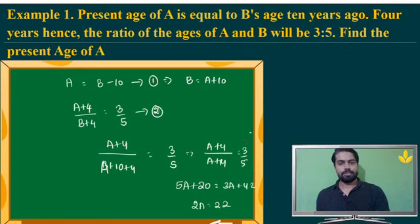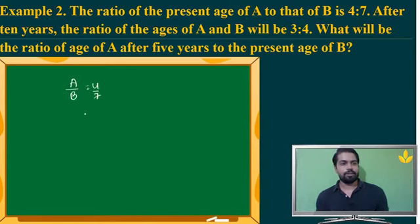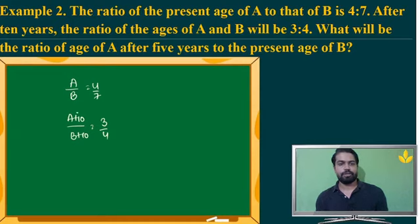It is a very simple question. Let's go to the next one. The ratio of the present age of A to B is 4 by 7. 10 years hence, the ratio becomes A plus 10 by B plus 10, which becomes 3 by 4. What would be the ratio of A's age after 5 years to the present age of B?